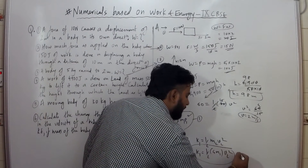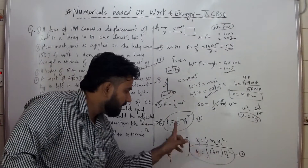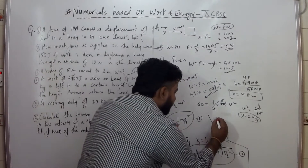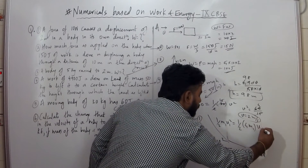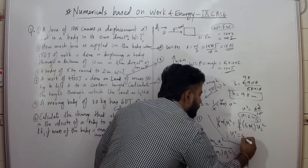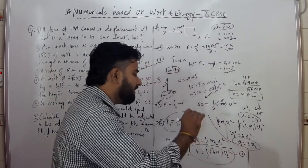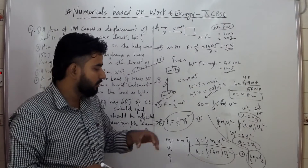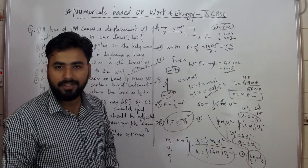Now let's compare equation 1 and equation 2. Both kinetic energies are the same, so the right-hand side terms are also equal: half M1 V1 squared equals half times 4M1 V2 squared. The halves cancel and M1 cancels, giving V1 squared equal to 4 V2 squared. Taking the square root: V1 equals 2 V2, meaning the new velocity V2 is half of V1 — the velocity must be halved to maintain the same kinetic energy.